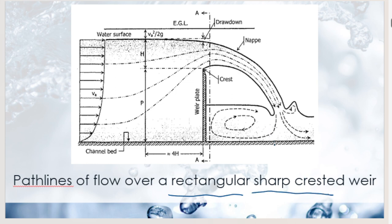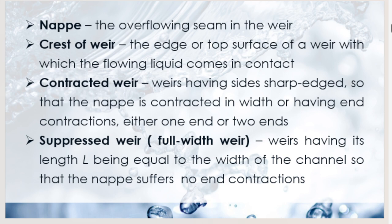Additional specifications: the pressure under the nappe shall be atmospheric — assume zero if no value is given. The approach channel shall have uniform cross-section for sufficient distance above the weir, with baffles to ensure normal velocity distribution, and the water surface must be free of waves or surges. The velocity of approach h-sub-v comes from upstream before the draw-down.